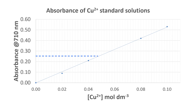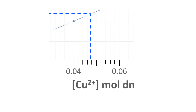If a sample of Cu2+ ions of unknown concentration were to be analysed, we could find the concentration using this plot. For example, if the unknown sample had an absorbance of 0.25, this would correspond to a concentration of 0.047 moles per decimetre cubed.